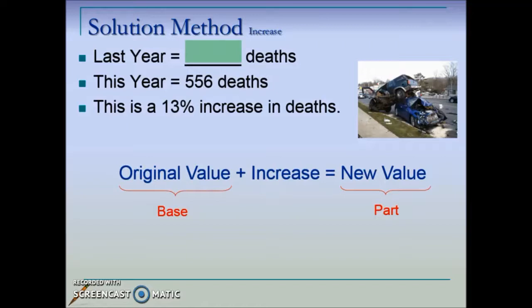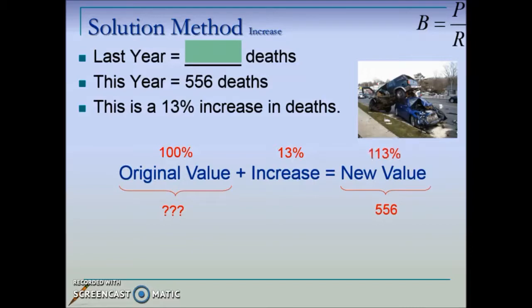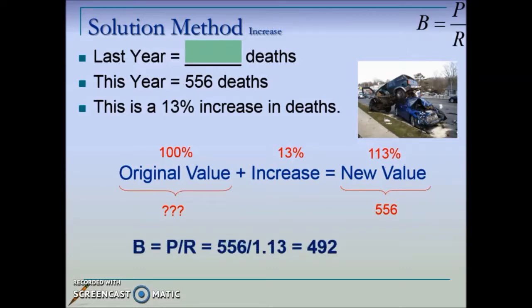From that we'll be able to determine what last year's — the original value, or in this case death count — ends up being. We base this on the basic percent formula solving for base: part divided by rate. We don't know the base, but it constitutes 100 percent. The problem tells us this was a 13 percent increase over the original, so adding those percentages gives us 113 percent, which acts as our rate. With 556 as our part, dividing part by rate and converting to a decimal gives us 492 as the traffic fatality count for 2014.